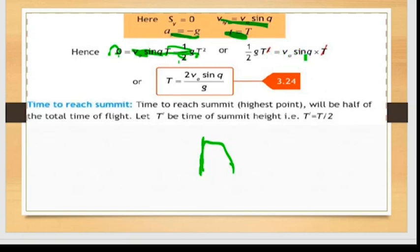Here Sy = 0 at the point of impact, so 0 = v₀ sin θ · t - ½gt², which gives us the time of flight T = 2v₀ sin θ / g.